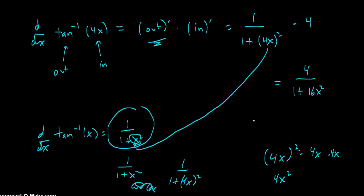So, the derivative of the inverse tangent of 4x turns into, by the chain rule, 4 over 1 plus 16x squared.